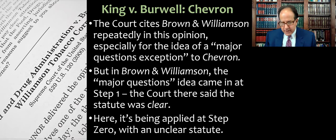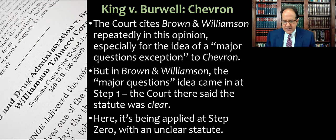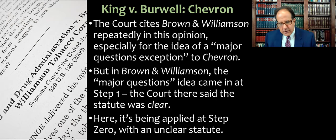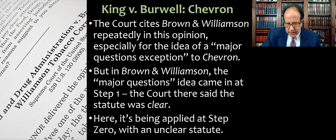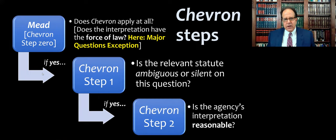When they get to Chevron step one — is the statute clear or ambiguous? — they say it is perfectly clear that Congress didn't intend the FDA to shut down the whole tobacco industry and ban cigarettes. So they basically say the statute was clear in Brown and Williamson. They go to Chevron, but at step one the statute's clear, so they don't have to give any deference to the agency. But here in King v. Burwell, please note it's being applied at what we call step zero with an unclear statute, which is a little different. This is from my diagram about Mead — USB Mead — which is what brought us Chevron step zero.